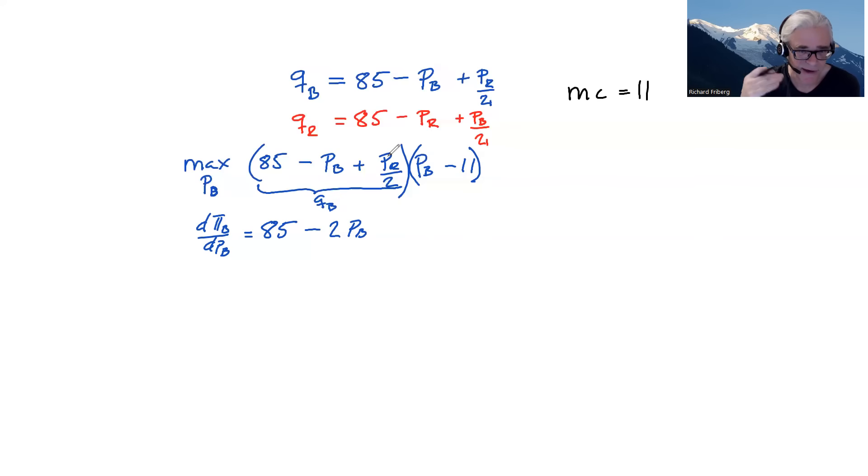It's interested in finding the best response function to that red price. But we're going to be putting ourselves in the red firm's shoes later and see, you know, what would that firm do to optimize its profits. But now when we're differentiating, we're treating it as a constant. So PR times PB divided by two differentiated with respect to PB becomes just PR over two.